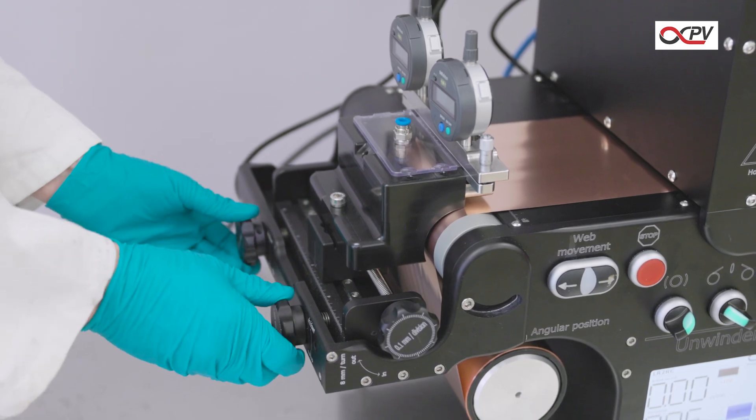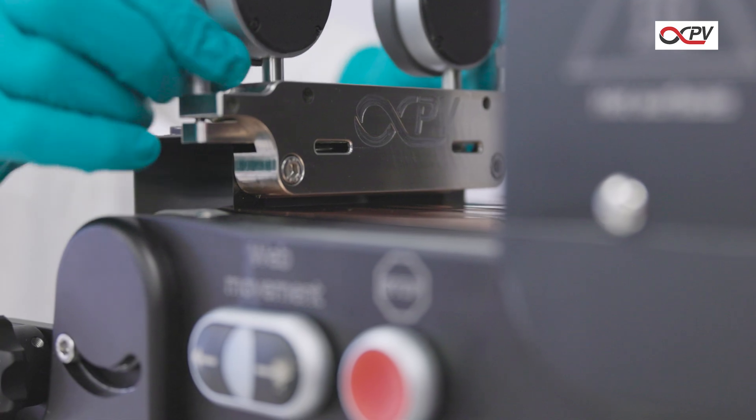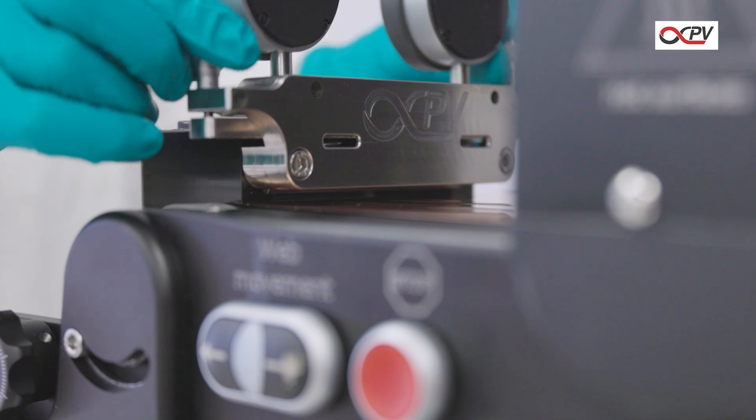Engage the ink reservoir against the roller for a tight seal and adjust the gap with micro precision between the coating knife and substrate to your desired wet film thickness.